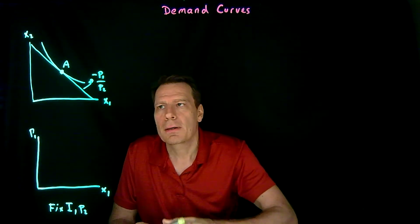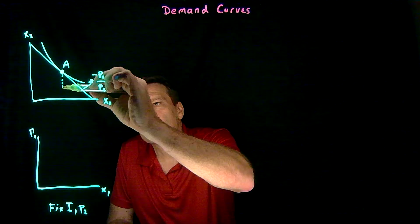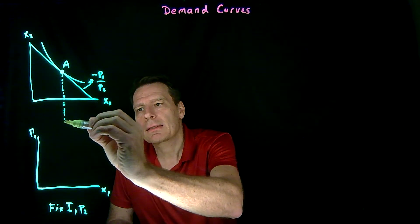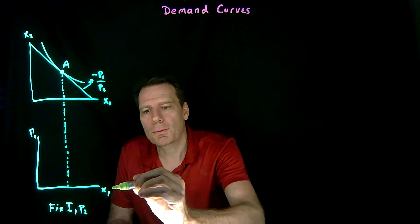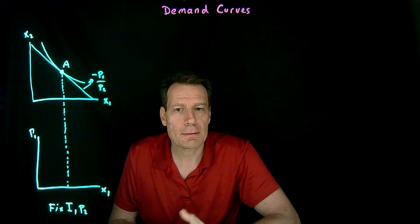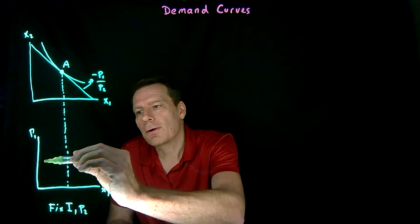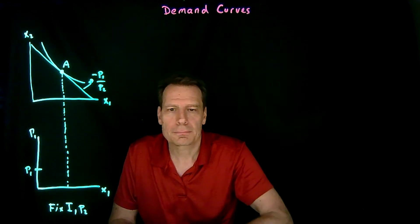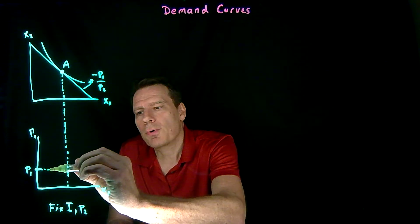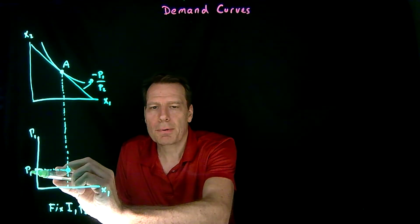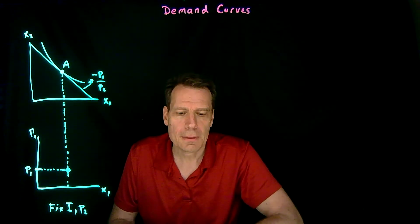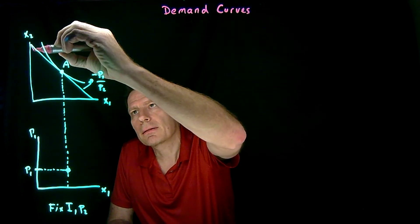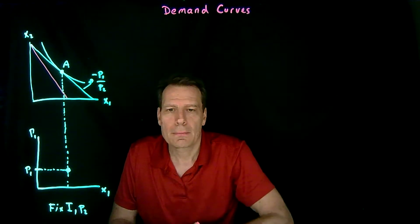That point holds income fixed and the price of good 2 fixed at these levels. We simply bring down to the horizontal axis the amount of x1 we're going to consume at bundle A, and then bring that down to the demand curve graph — since we're also measuring x1 on the horizontal axis there. On the vertical axis, the price of good 1 will be at a certain level. So we have one point on our demand curve: at that particular price, this is how much of the good we're going to consume.